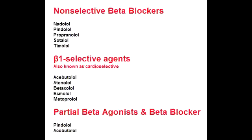What is the mnemonic to help remember the beta-1 selective antagonists? Remember 'A BEAM of beta-1 blockers': A for acebutolol, B for betaxolol, E for esmolol, A for atenolol, and M for metoprolol.